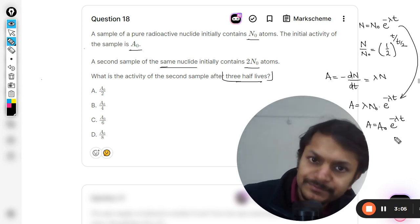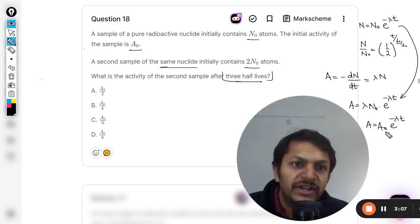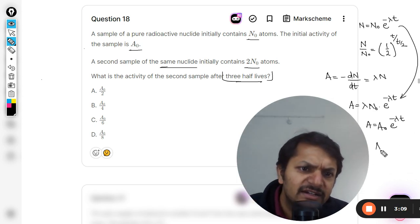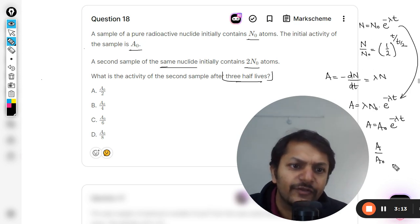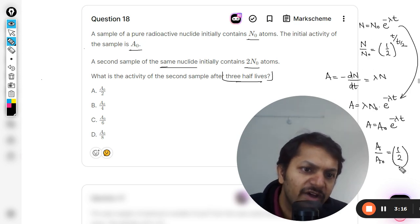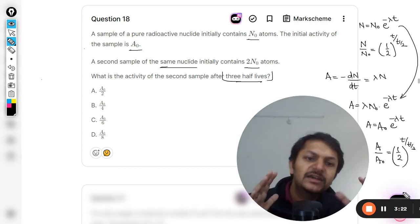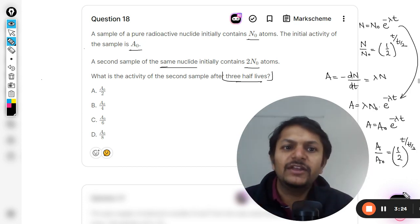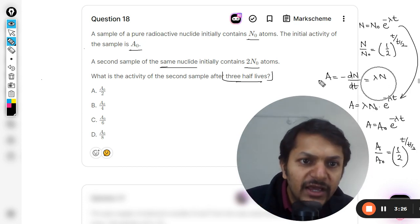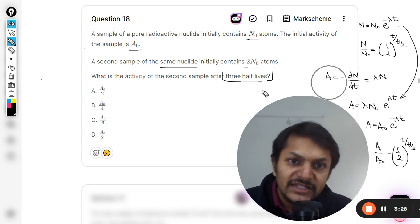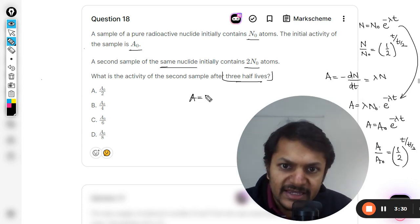This is about activity. Even for activity, this formula is valid, but instead of N we are going to use the activity A, and here you would be using t divided by t-half, which is the number of half-lives that have been spent. One more point: A = λN and A₀ = λN₀.